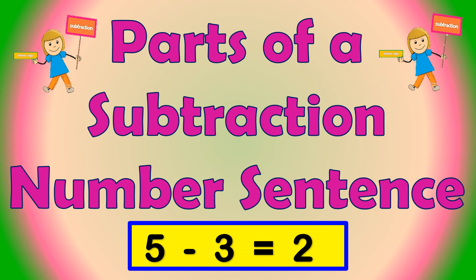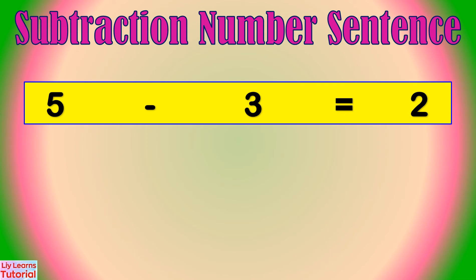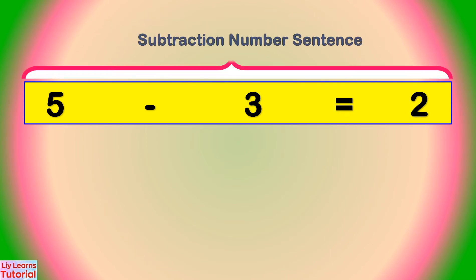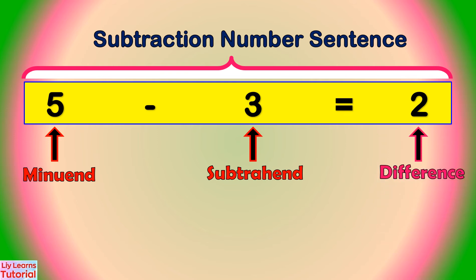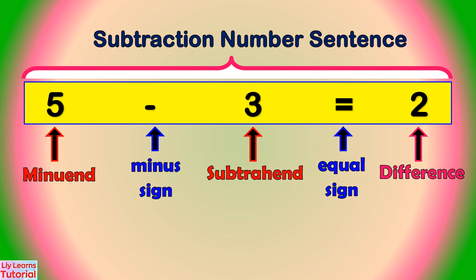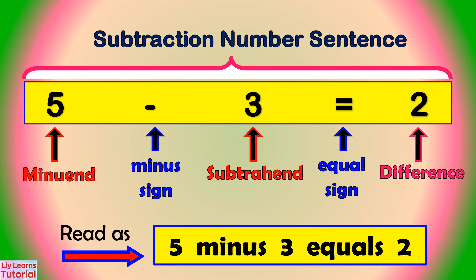Let's look at the parts of a subtraction number sentence. This is a subtraction number sentence. 5 is the minuend, 3 is the subtrahend, 2 is the difference. This is a minus sign, and this is an equal sign.